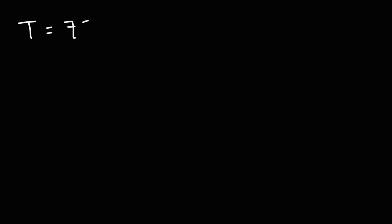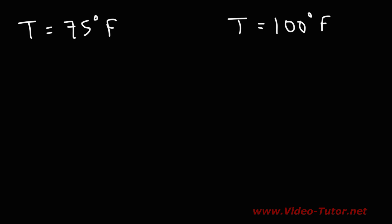Let's say the temperature is 75 degrees Fahrenheit, and let's also say it's 100 degrees Fahrenheit. Go ahead and convert these two values to Celsius. Let's start with the first one on the left. First, let's write the formula: the Celsius temperature is the Fahrenheit temperature minus 32, divided by 1.8.